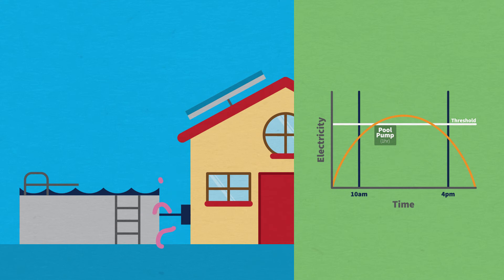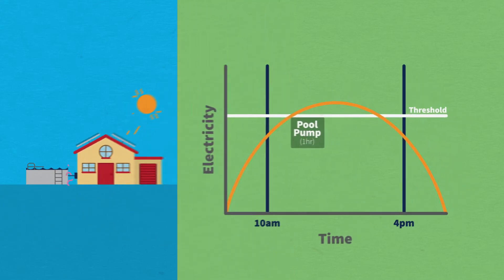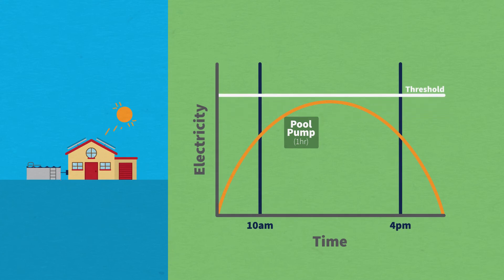Best of all, CarbonTrack uses machine learning to analyze your pool pump's electricity use, then automatically fine-tunes the solar generation threshold. This gives you a solution tailored specifically to your energy use habits.